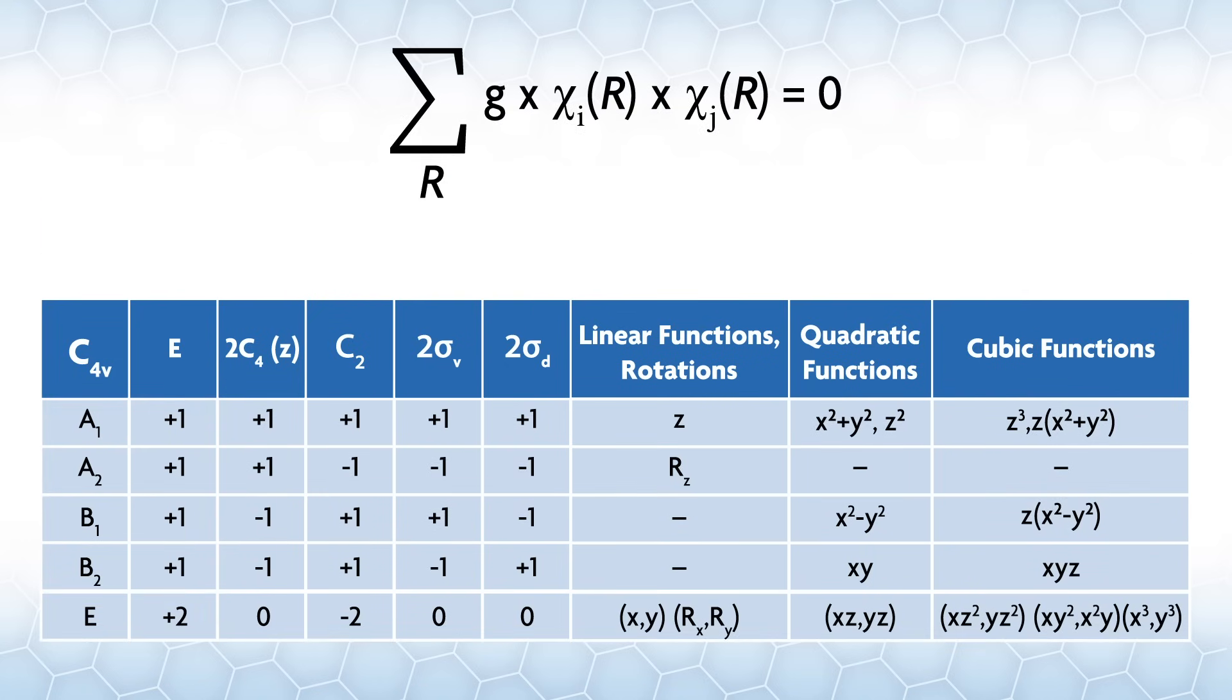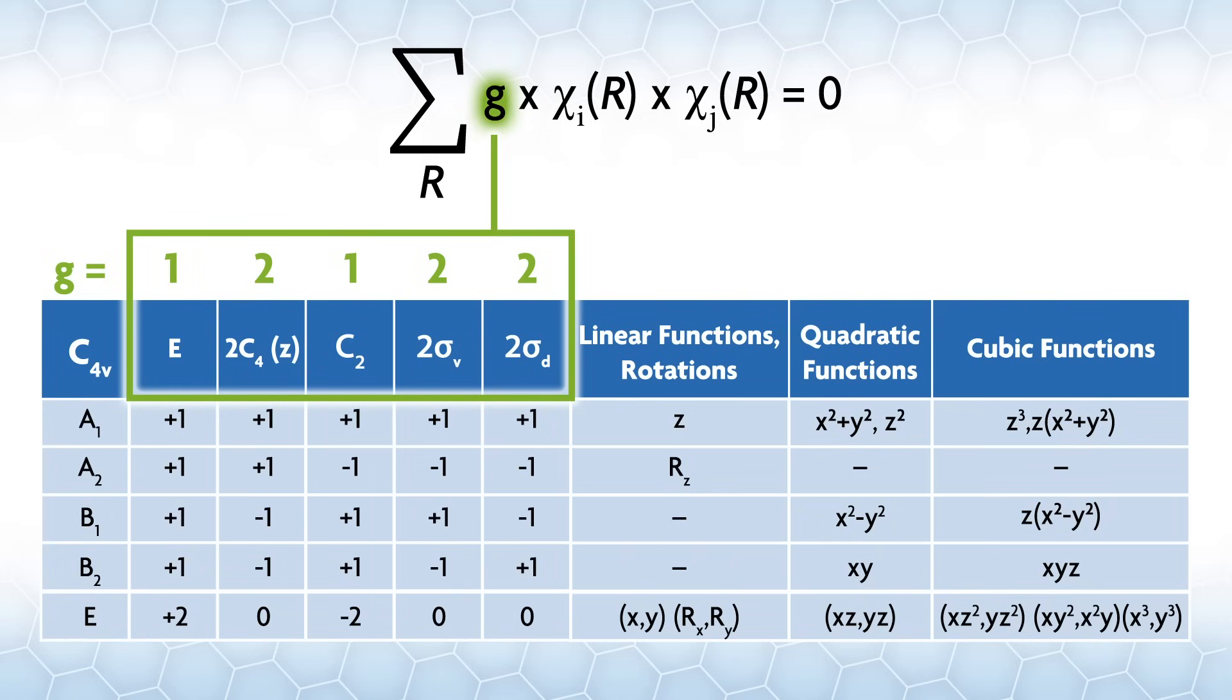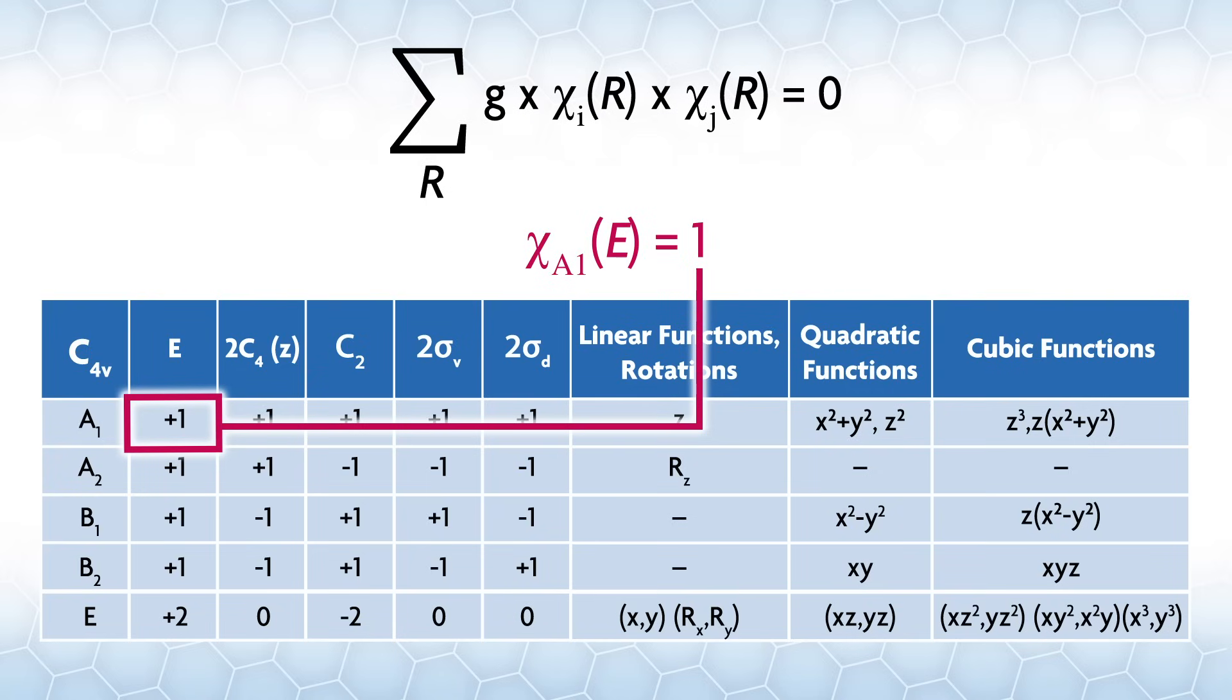The irreducible representations are orthogonal to one another. Mathematically, that means for two irreducible representations i and j, summed across all classes are the number of operations in the class g times the character, which is usually given the symbol chi in the ith variable, times the character of the jth rep is equal to zero. First, what is g? It's the number of operations in the class, so the coefficient for the class. We will often use the Greek letter chi for a character. The equation has chi_i(R) and chi_j(R).